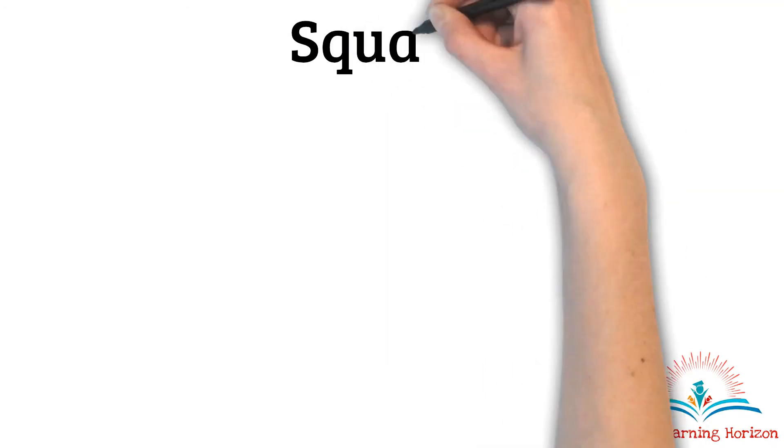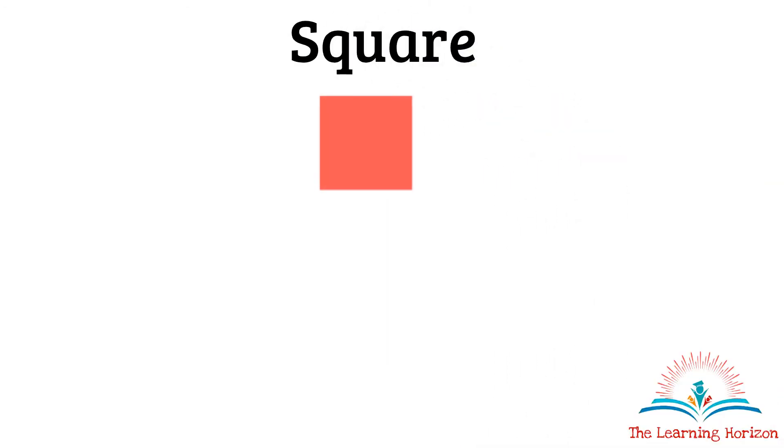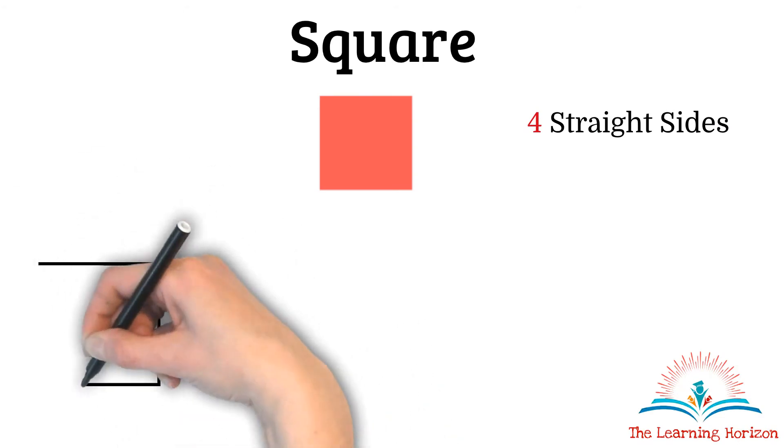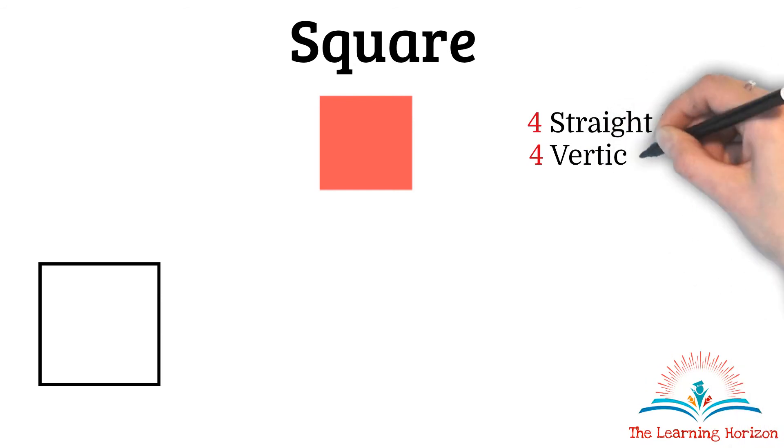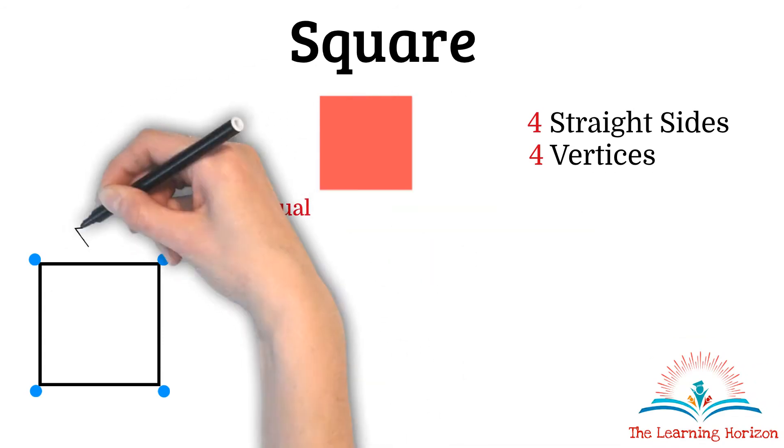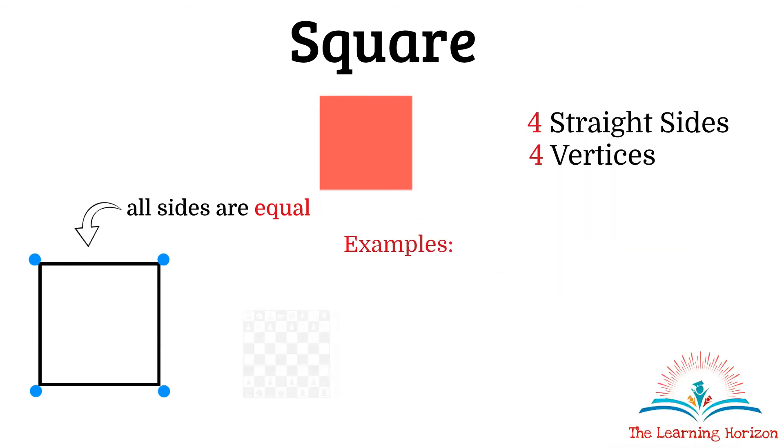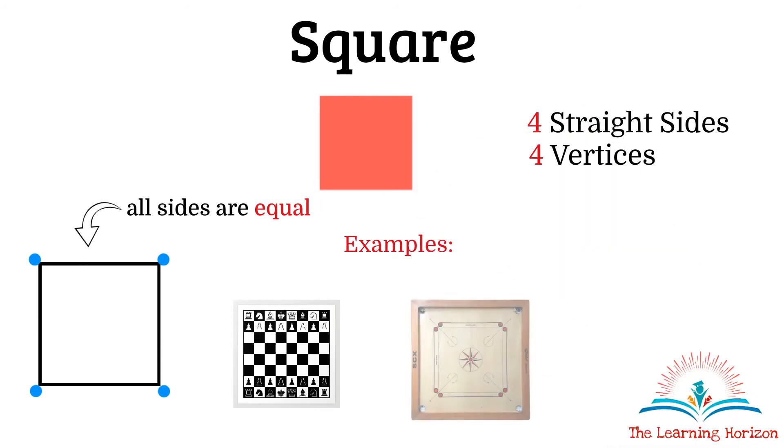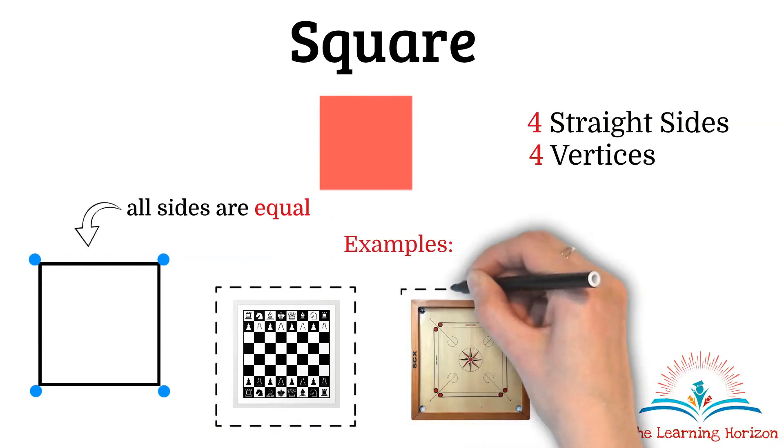Square. Square is a shape with four straight sides, that is one, two, three, four, and four vertices, one, two, three, four. All the sides of a square are equal. Some examples are a chess board or a carom board. Both of these have all four sides equal.